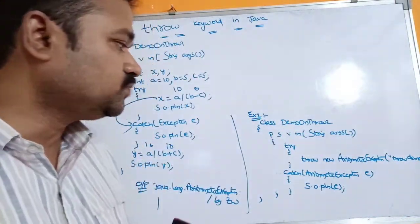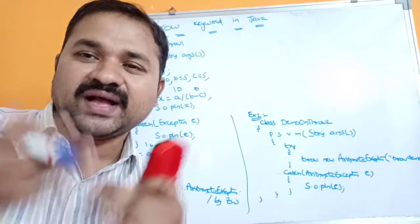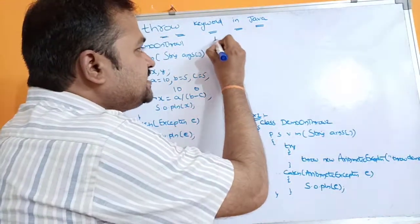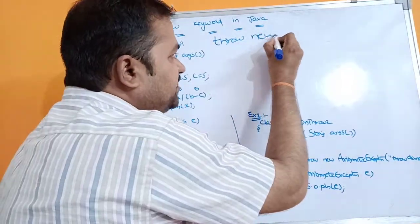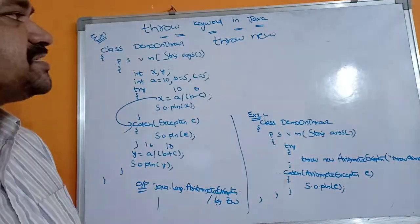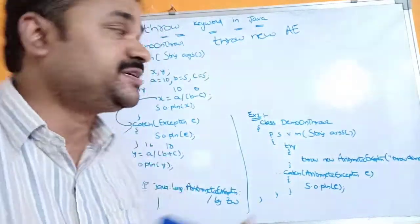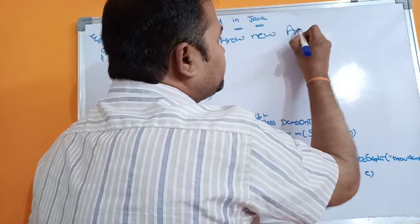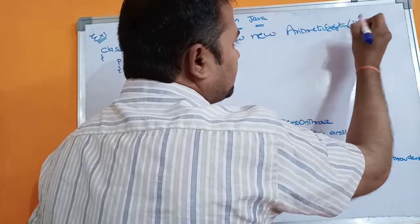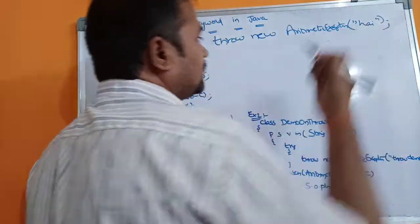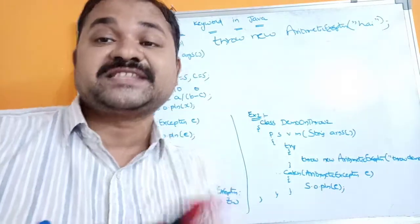The second example demonstrates how the throw keyword throws an exception object explicitly. The class name is Demo1Throw2. Execution starts from the main method. To throw an exception object explicitly, the syntax is: throw new ExceptionClassName(). We use the new operator to create the object. For example, to throw an ArithmeticException object: throw new ArithmeticException("hi"). Similarly, to throw an ArrayIndexOutOfBoundsException object, the syntax follows the same pattern.